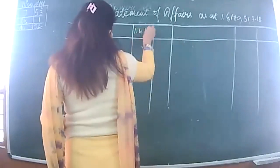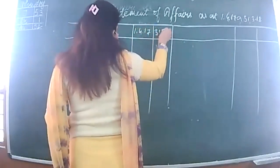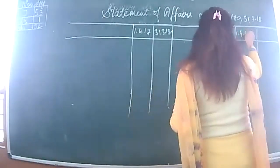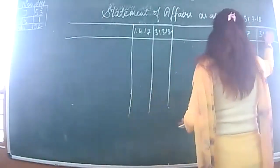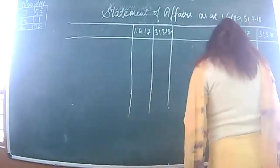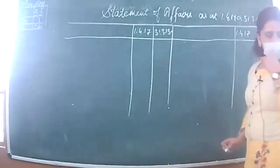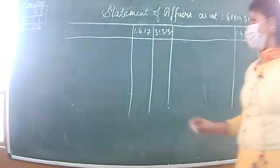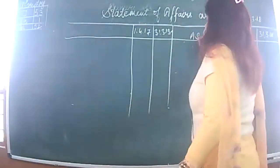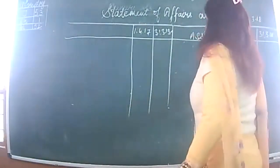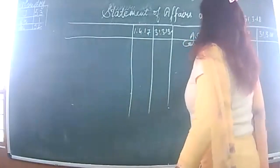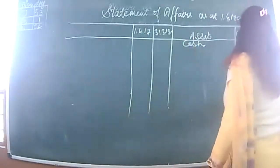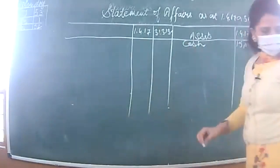This statement covers 1st April 2017 and 31st March 2018. Let's begin filling it in. Cash in hand: opening 15,000 and closing 16,000 - this is the asset side. Cash opening is 15,000 and closing is 16,000.